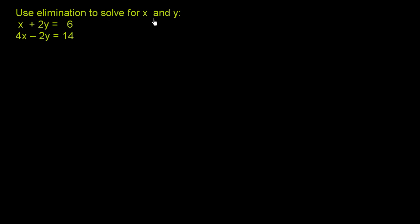Use elimination to solve for x and y. And they give us two equations here. x plus 2y is equal to 6, and 4x minus 2y is equal to 14.